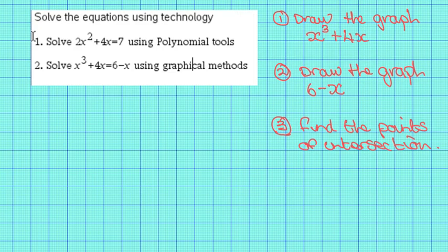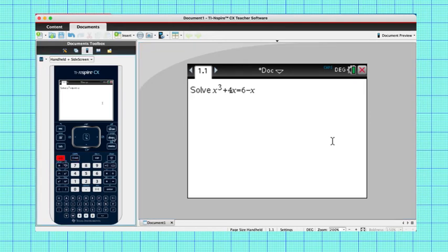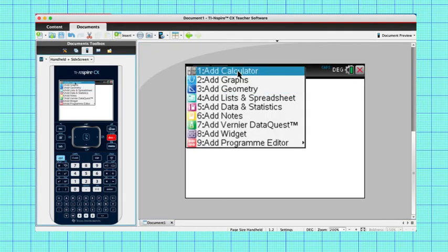Now let's go to our TI-inspire and solve the equation. In x cubed plus 4x equals 6 minus x, we must first open the graphs page.